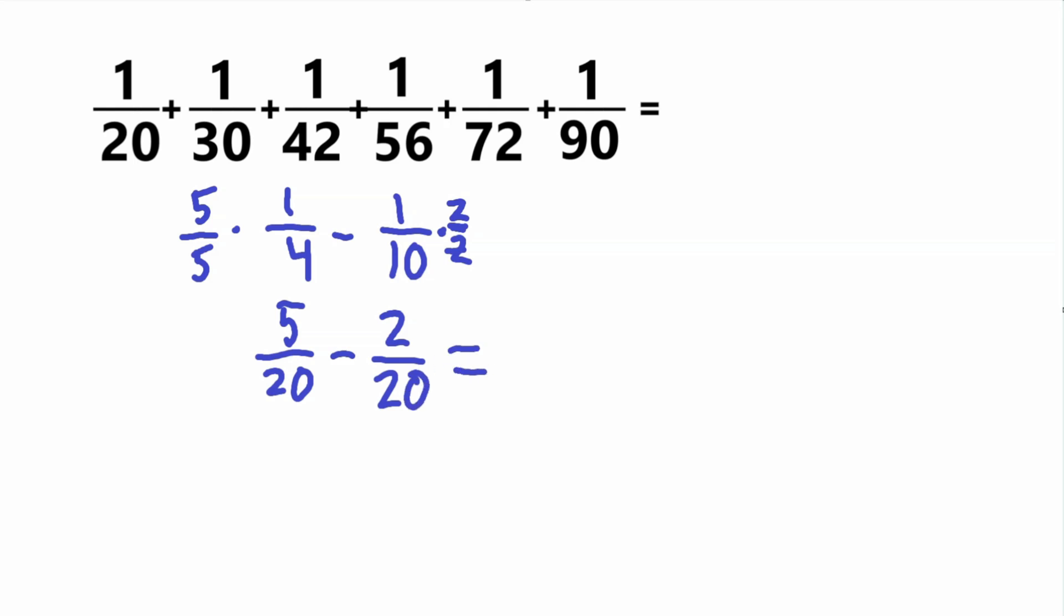And now, simple subtraction, subtract the numerators, our final answer is 3 over 20. So that is our answer. This big problem, we got it to 3 over 20.